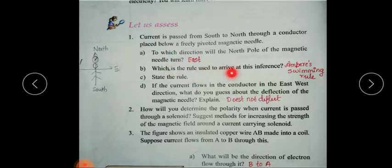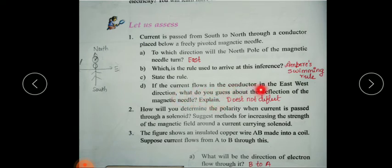The answer to the first question is east. The rule used to arrive at this inference is Ampere's swimming rule. Next: if the current flows through the conductor in the east-west direction, what do you guess about the deflection of the magnetic needle? The magnetic field lines will be in the north-south direction. Since the magnetic needle always stands in the north-south direction and the field lines are also in the north-south direction, the needle will not deflect.